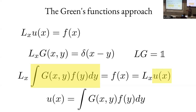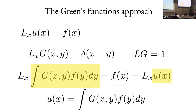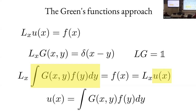We haven't solved anything so far — we still have to solve either the original equation or the Green's function equation. The knowledge of G is equally difficult to the knowledge of u itself. But this method is appealing for many reasons: it automatically includes the boundary conditions, and it is universal — solve it once for G and apply it to any f.